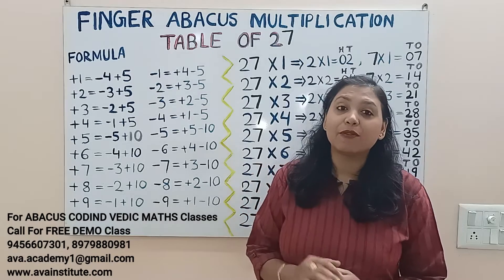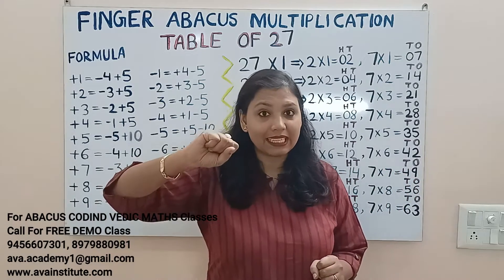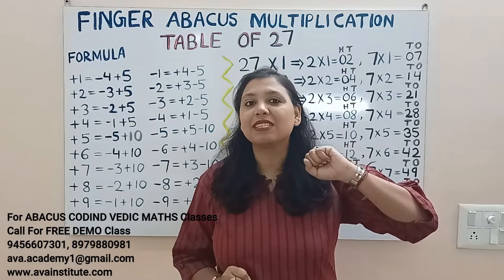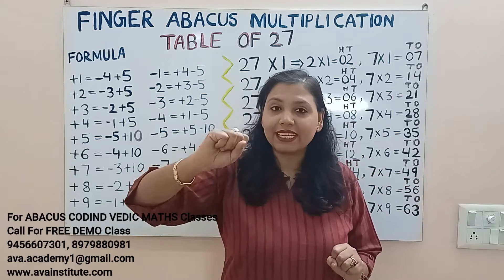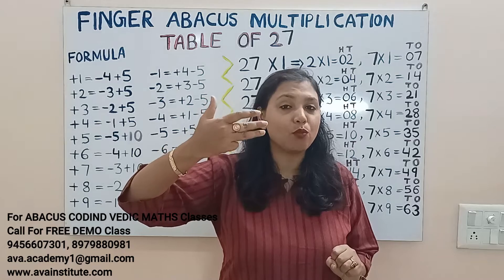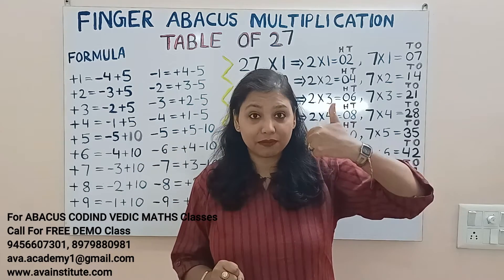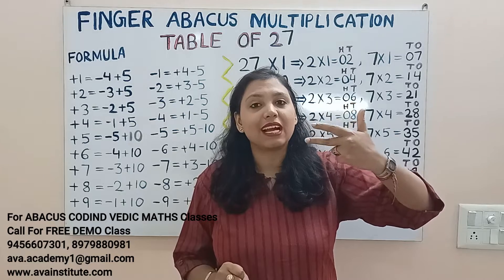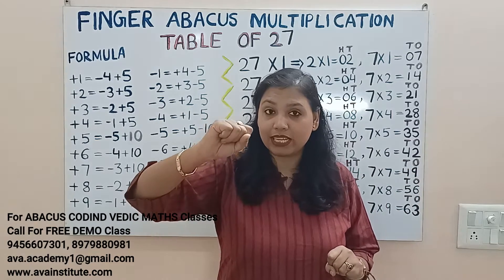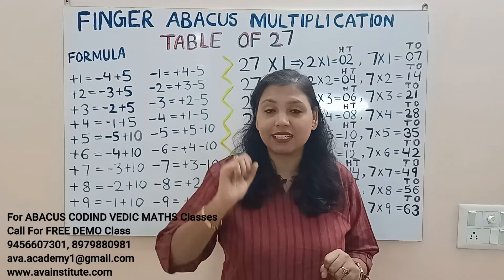So now let us start. Friends, you know that in Fingerabacus, the right hand represents ones space and the left hand represents tens space. In the right hand, the thumb is 5 and fingers value are 1 each. In the left hand, the value of thumb is 15 and the value of fingers are 10 each. And in the right hand only, we also represent hundreds.